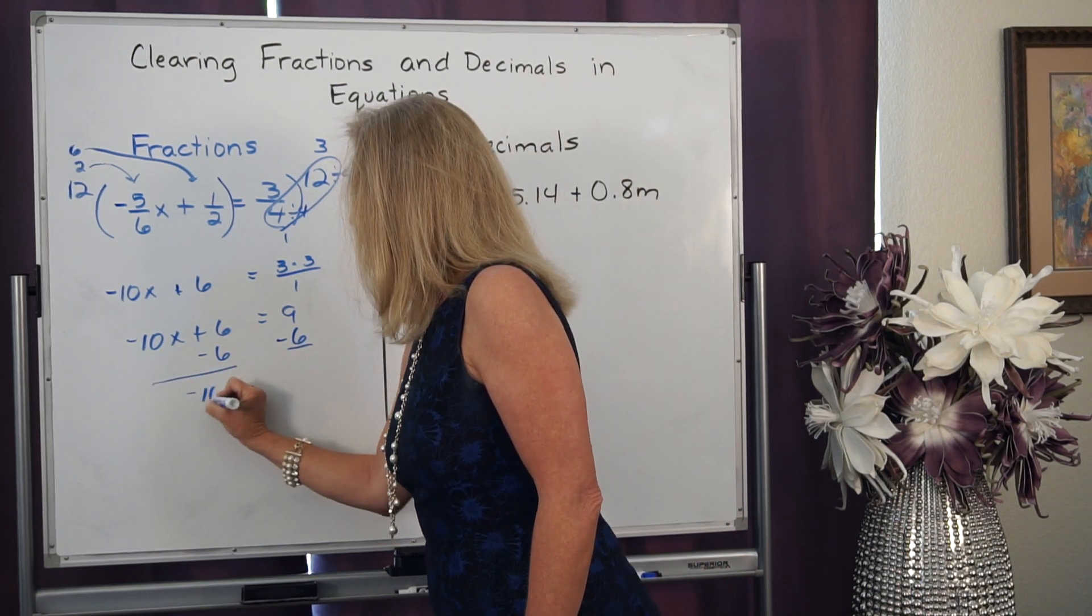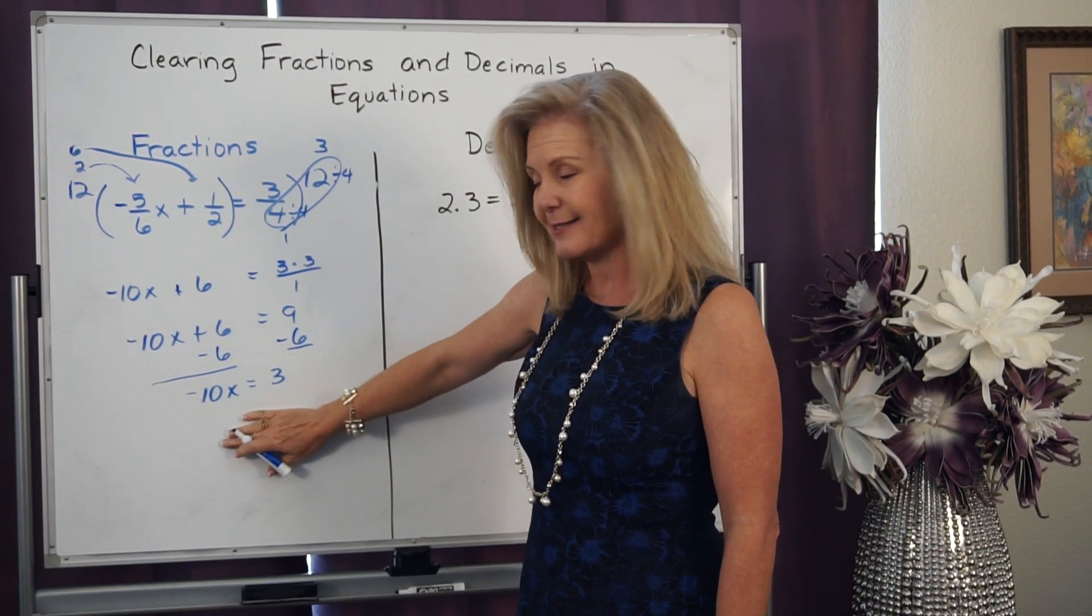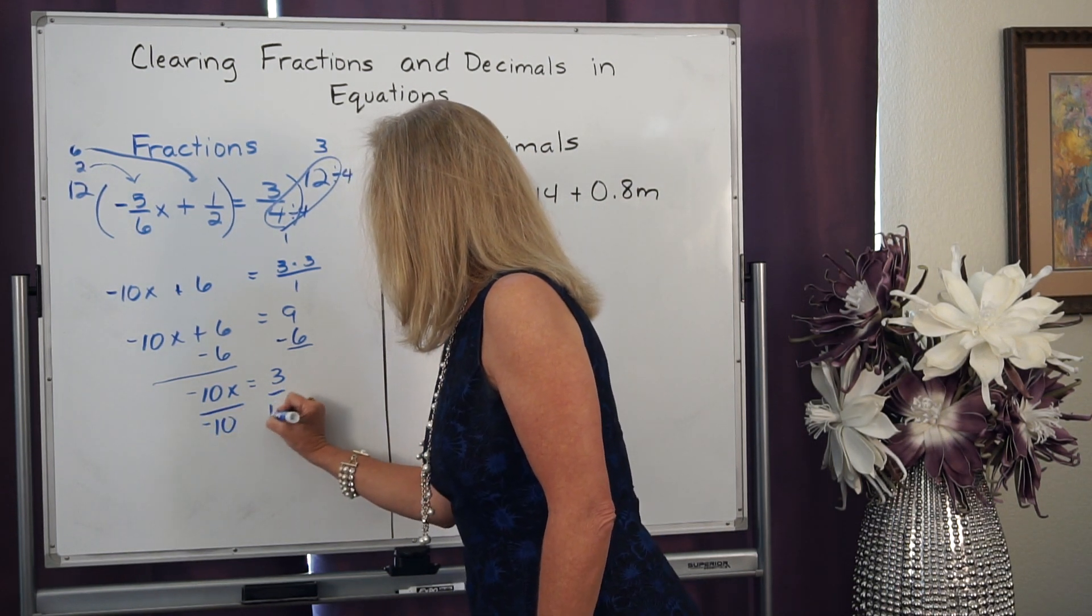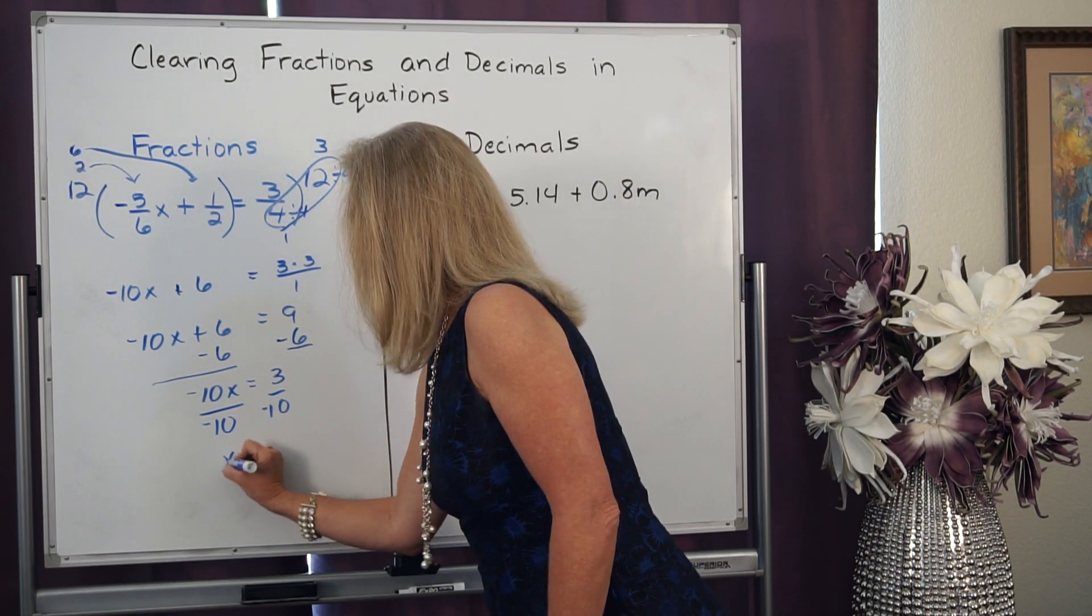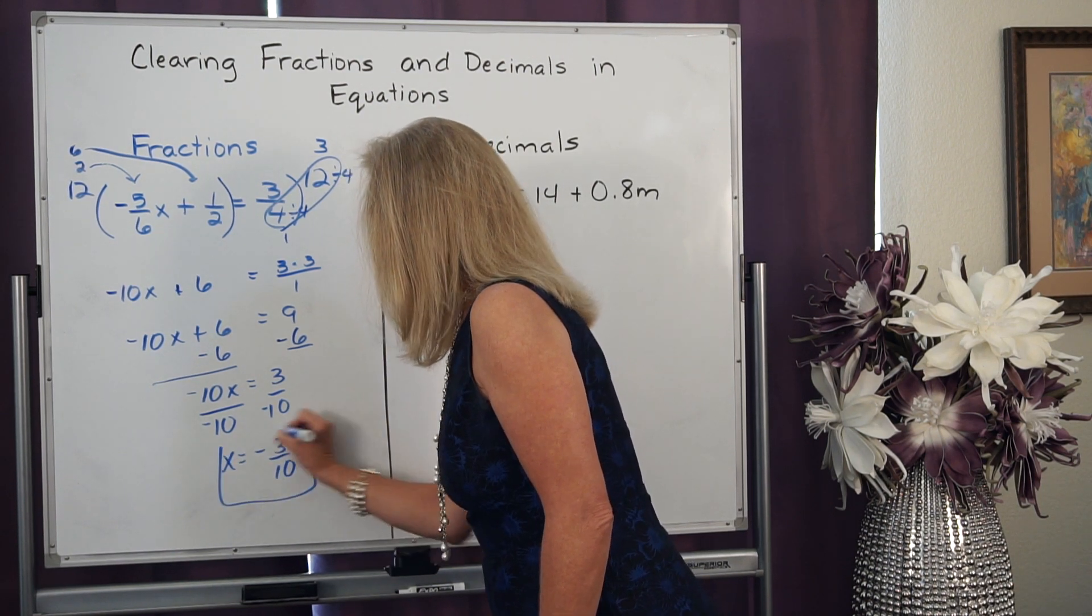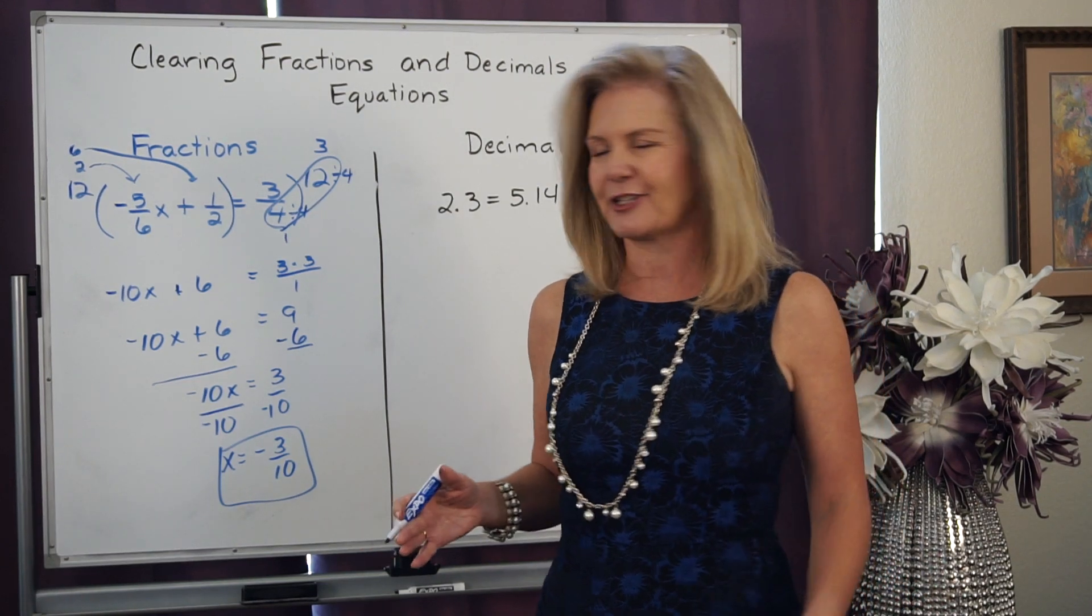I'm left with negative 10x, and I'm left with 3. I still need to get x by itself. So I'm going to divide both sides by negative 10. I'm left with x equals negative 3 tenths. And there's my answer. I got to do most of the equation without having to use any fractions.